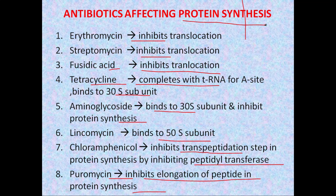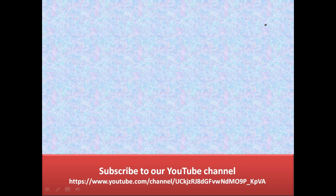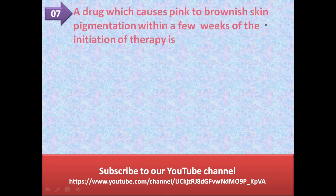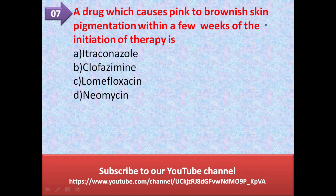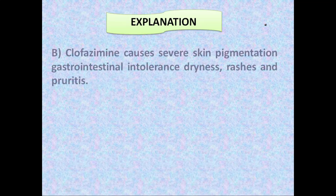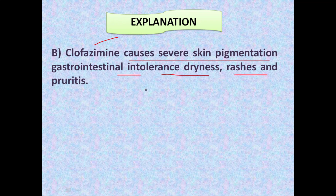Next question: a drug which causes pink to brownish skin pigmentation within a few weeks of initiation of therapy is — option A itraconazole, option B clofazimine, option C lomifloxacin, option D neomycin. The correct answer is clofazimine, which is responsible for pink to brownish skin pigmentation. Clofazimine causes skin pigmentation, gastrointestinal intolerance, dryness, rashes, and pruritus.